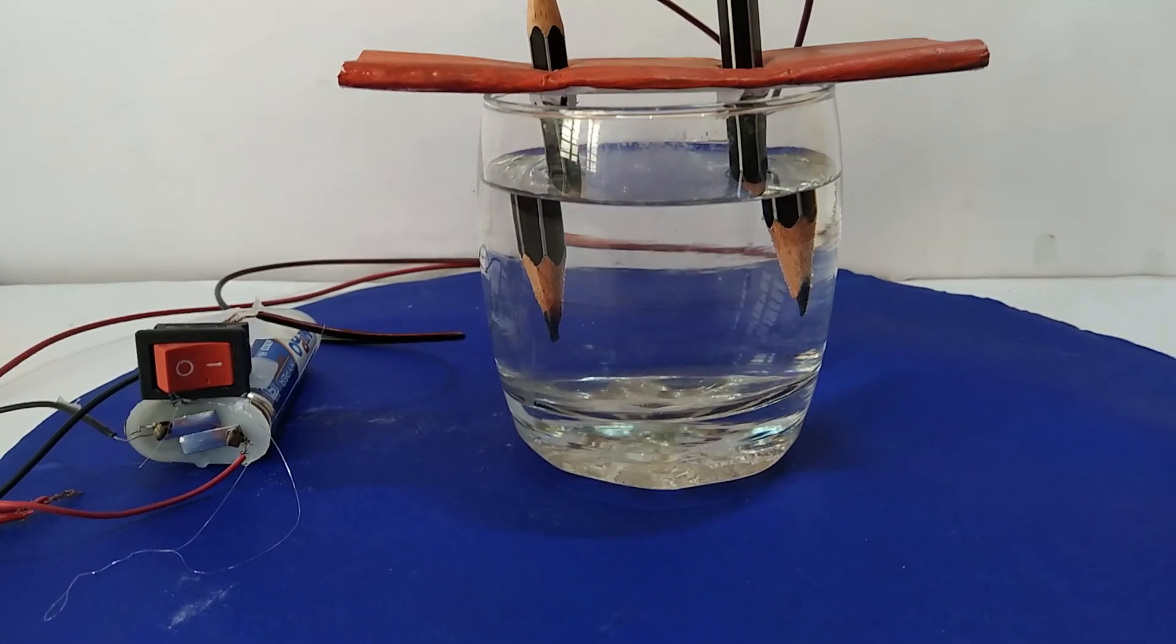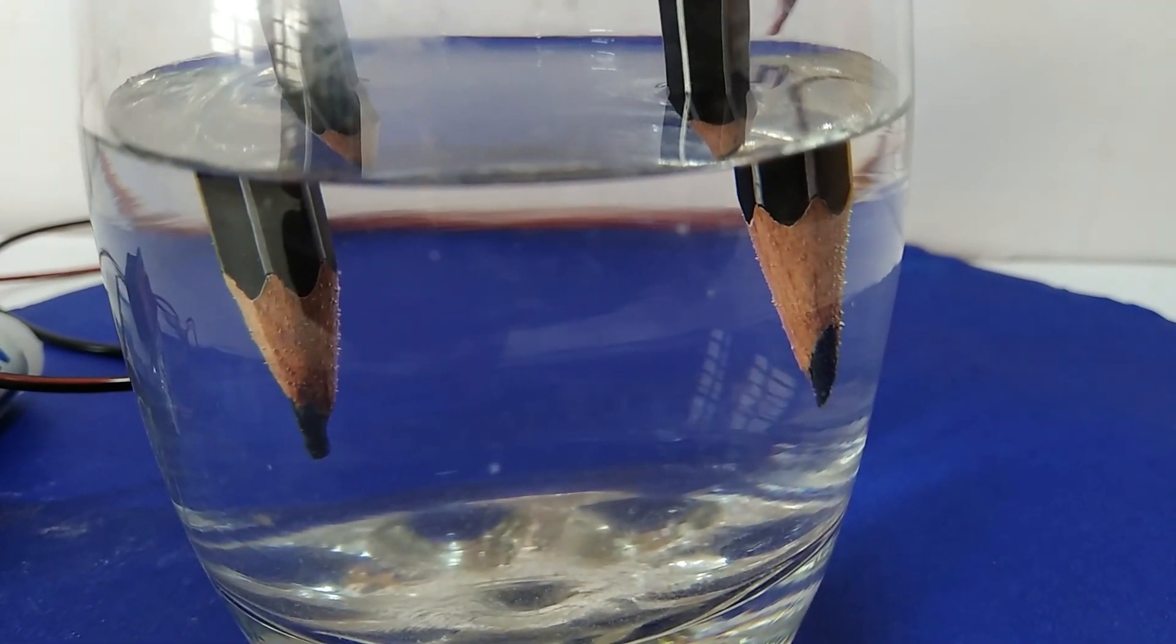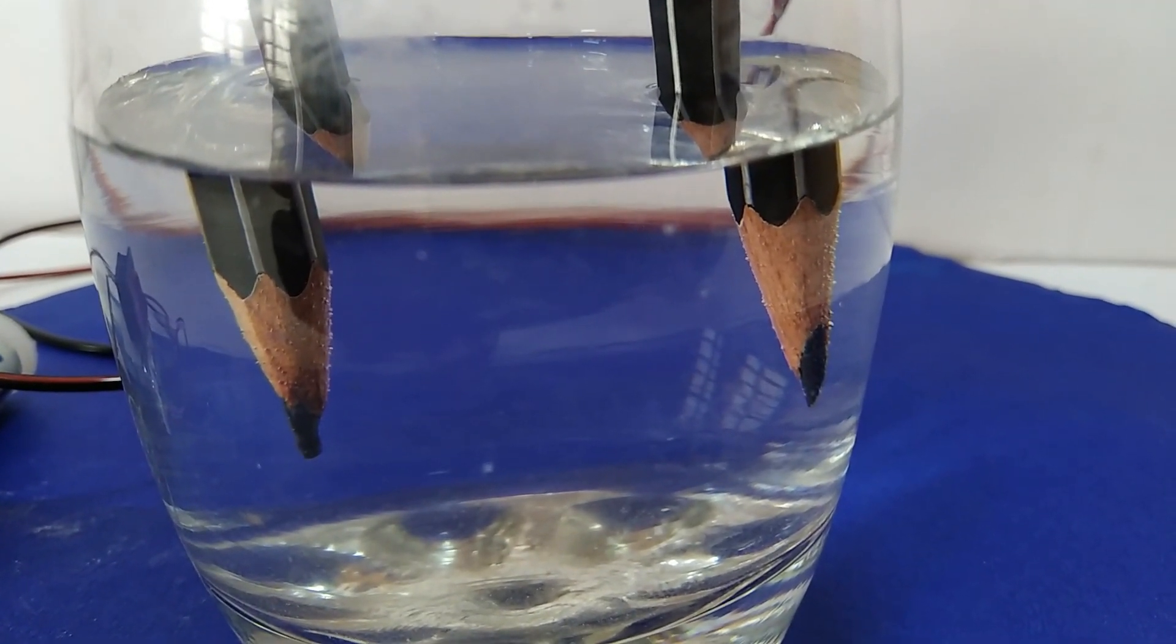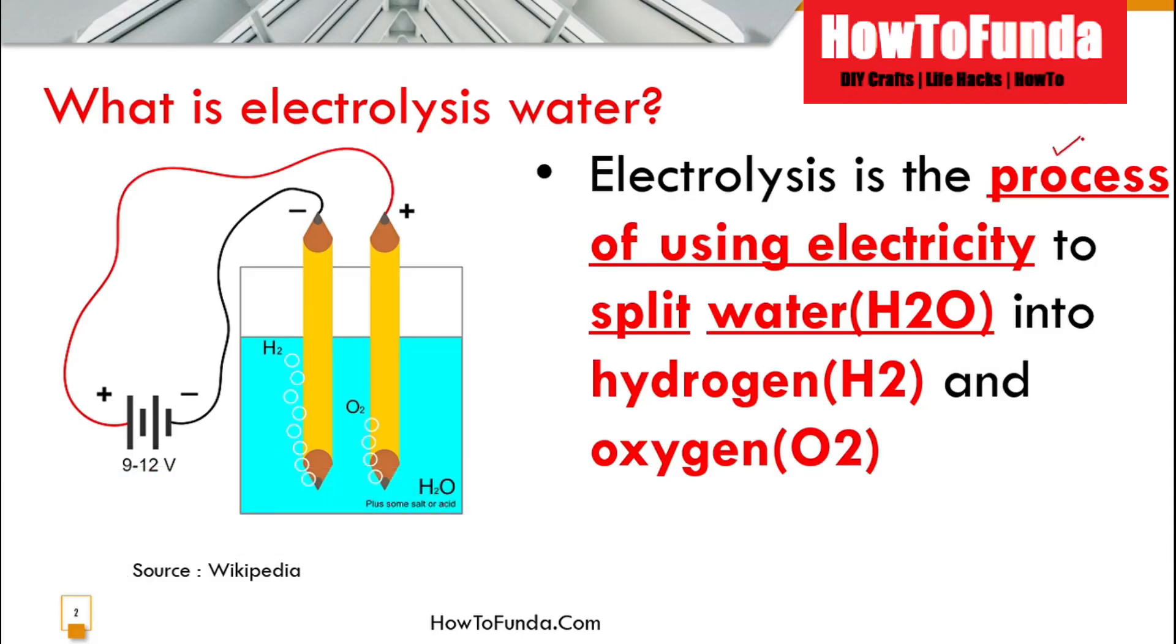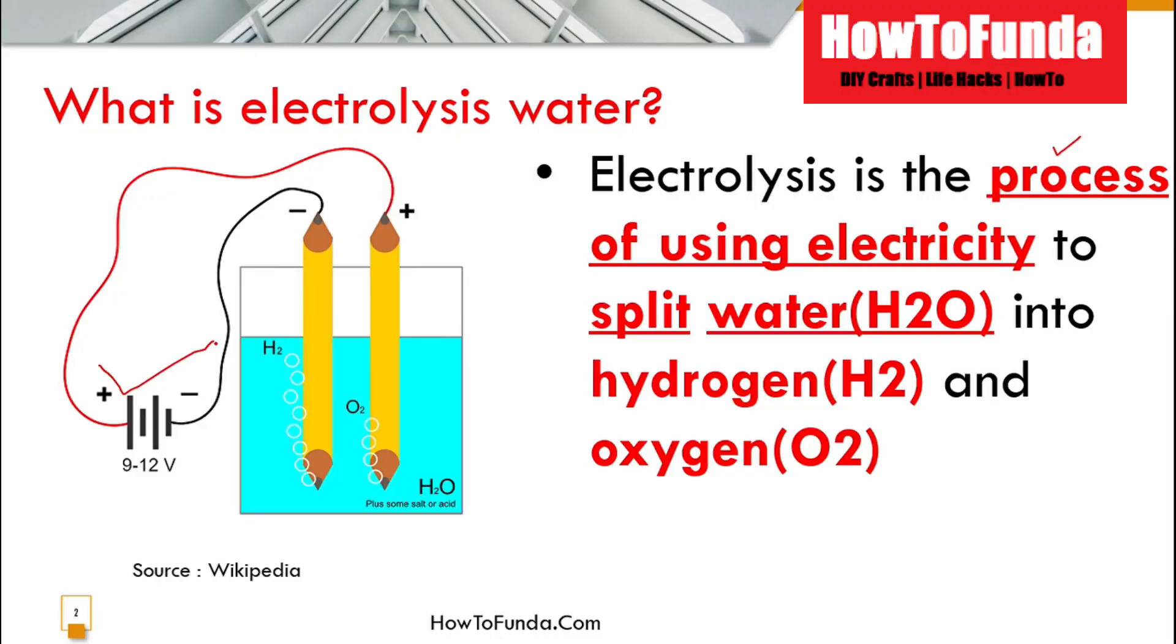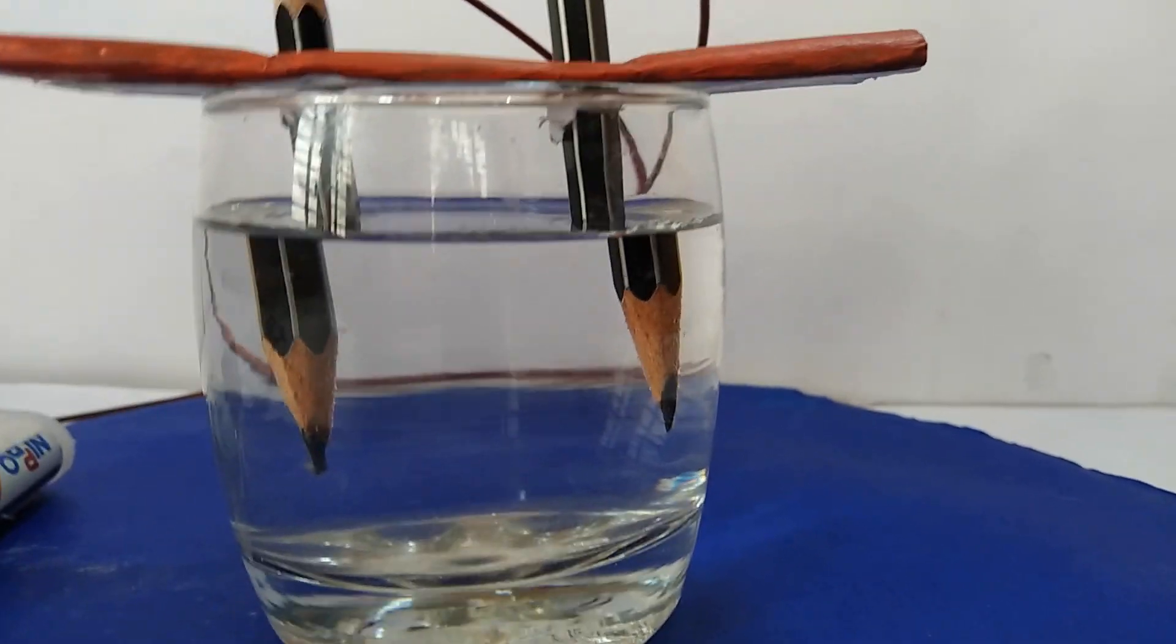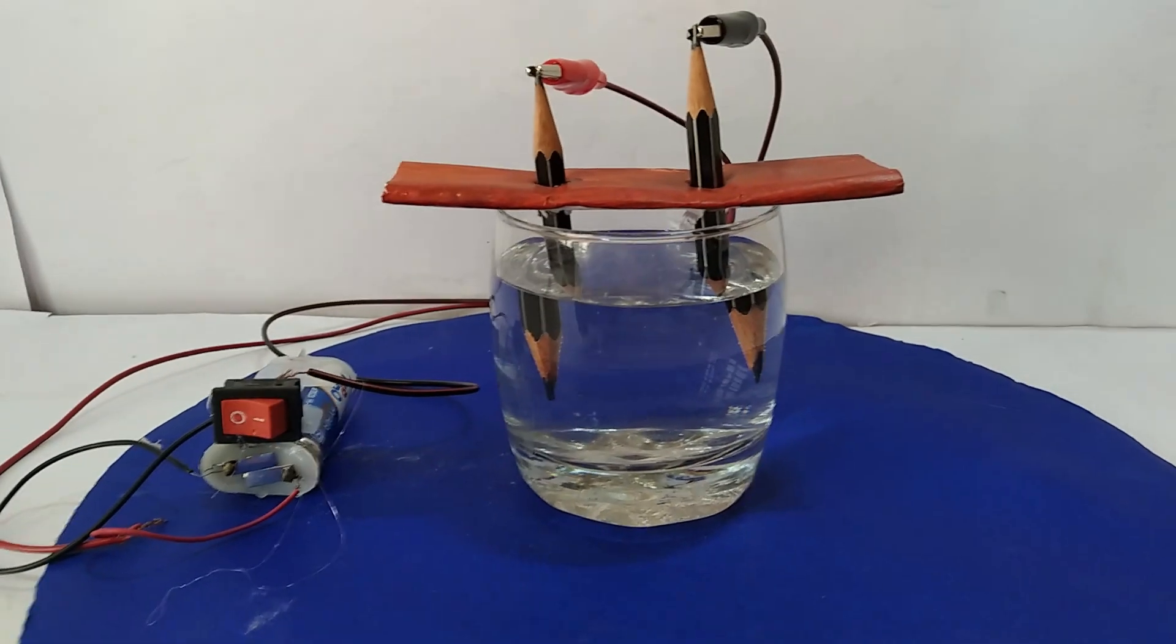Electrolysis of water is a process where, by using electricity—you can see we are using a 9 to 12 volt battery—electricity is used to split water (H2O) into hydrogen and oxygen. That is the overall process of electrolysis of water.